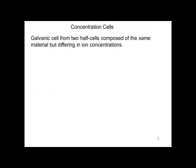Concentration cells: galvanic cells from two half-cell reactions composed of the same material but different ion concentrations. Here we have zinc in contact with zinc 2+ ion, 0.1 molar. On the other side, zinc 2+ at 1 molar in contact with zinc.